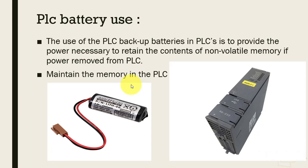For example, consider an assembly line with a day-to-day counter. If there is a power-off, the PLC powers off. The counter value that was running at the time of power-off needs to be preserved. So the battery is used in the PLC to retain that counter value.